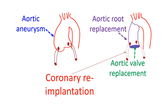When the aortic root is replaced, the coronary arteries which arise from the aortic root have to be re-implanted in the composite graft. Composite graft means an artificial graft for a portion of the aorta which is removed, along with an artificial aortic valve. Coronary arteries are blood vessels supplying blood to the heart muscle.